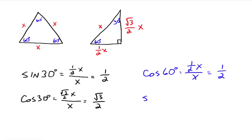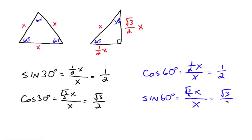Let's do the sine of 60 degrees. Sine is opposite over hypotenuse, so the side opposite the 60 degrees is the square root of 3 over 2 times x, and the hypotenuse is still just x. So we have the square root of 3 over 2 times x divided by x, which gives us the square root of 3 over 2. So the cosine of 30 degrees is the same thing as the sine of 60 degrees.